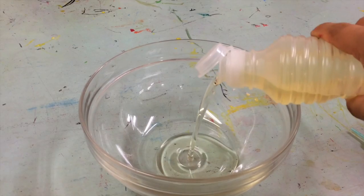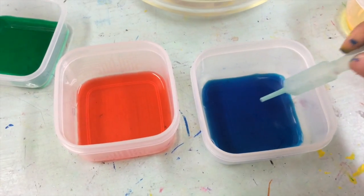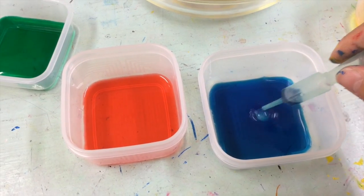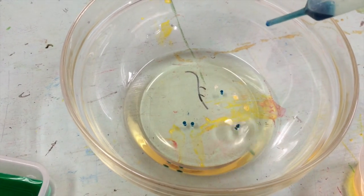Then put a good amount of oil into your bowl. Using an eyedropper, put a couple drops of food coloring water into the oil.